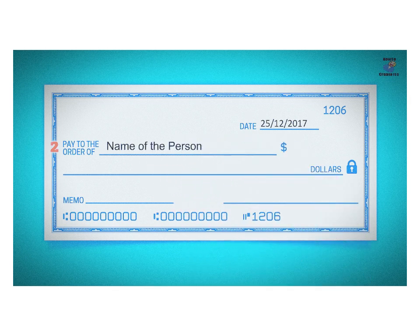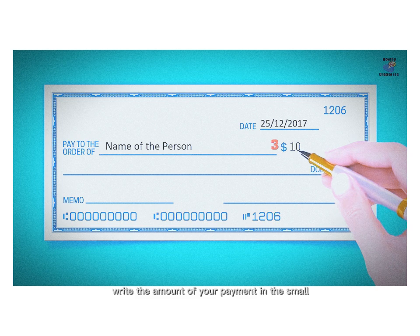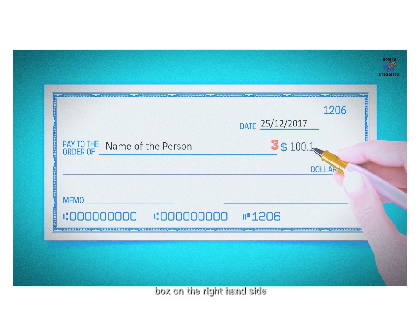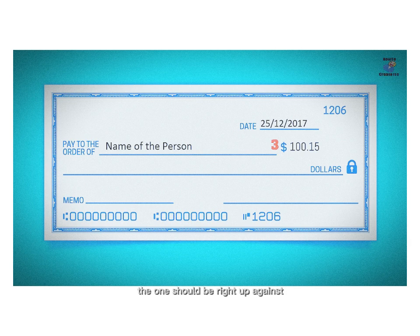Number 3: Amount in Numeric Form. Write the amount of your payment in the small box on the right-hand side. Start writing as far over to the left as possible. If your payment is for $100.15, the one should be right up against the left-hand border of the dollar box to prevent fraud.